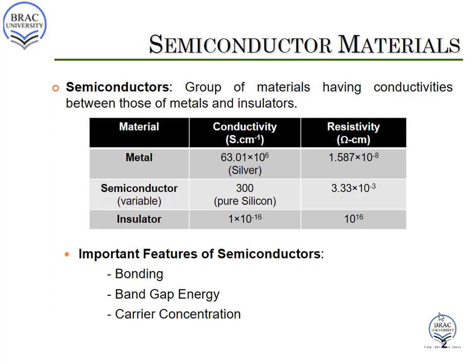If we analyze this definition in terms of the conductivity of a material, we will get a better view of it. From Ohm's law, we know about resistivity. Conductivity is the reciprocal or inverse of resistivity. The more the conductivity of a material, the better conductor it is. From the chart, we can see that the conductivity of metal is 6×10⁶, which is very large, and resistivity is pretty low. An insulator has a conductivity of 1×10⁻¹⁶, which is very small, and its resistivity is quite large. In the case of a semiconductor, conductivity is not as high as metal and not as low as insulator — it is somewhere in between. That is why it is called a semiconductor.